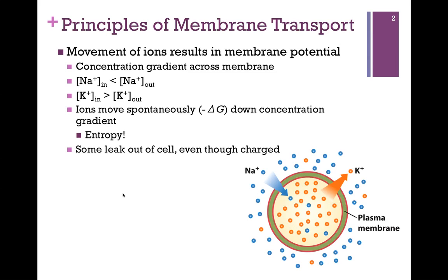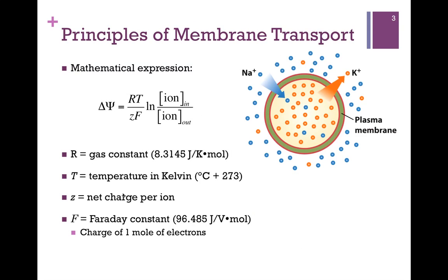There are cases where charged particles can leak out of the cell. This is at a minimal level but is significant in some biological systems. If we want to develop a mathematical expression to quantify this membrane potential, here's our expression. The delta psi is the difference in potential or charge across that membrane. It equals R times T, divided by Z times F, times the natural log of the concentration of ion inside over the concentration of ion outside the cell. R is the gas constant, T is the temperature in Kelvin, Z is the net charge per ion, and F is the Faraday constant — the charge on one mole of electrons.